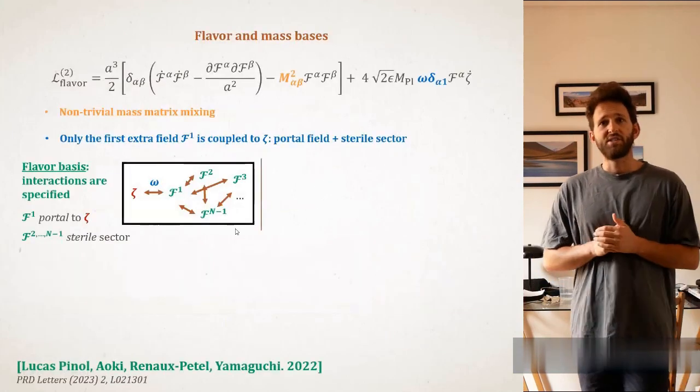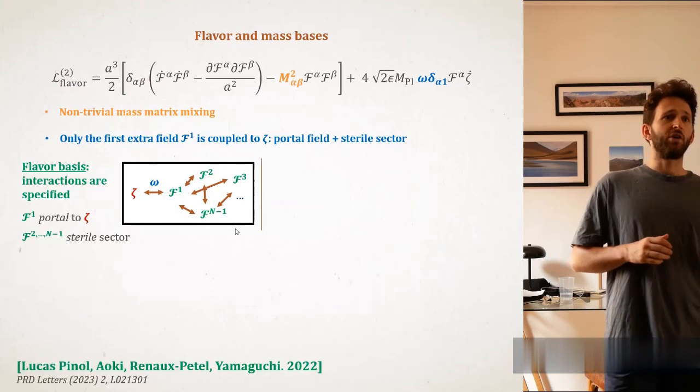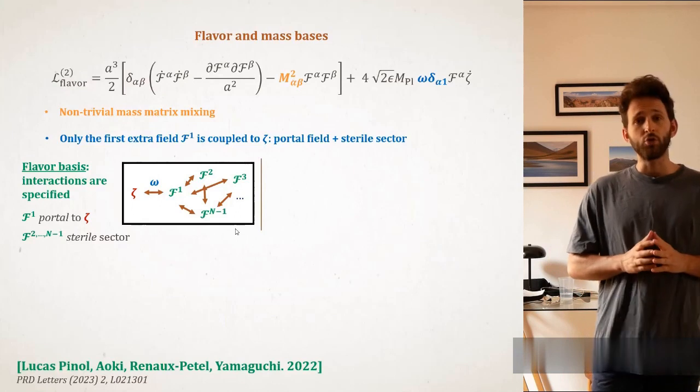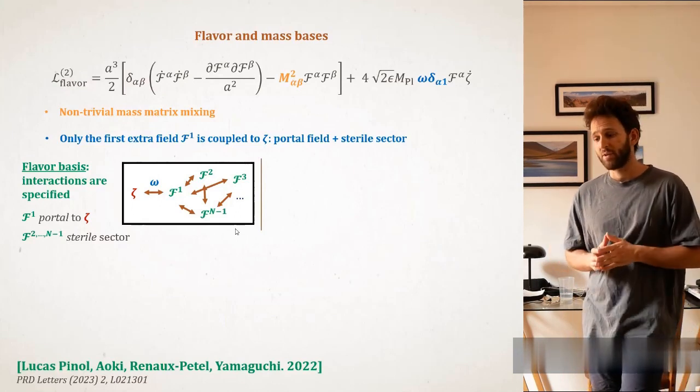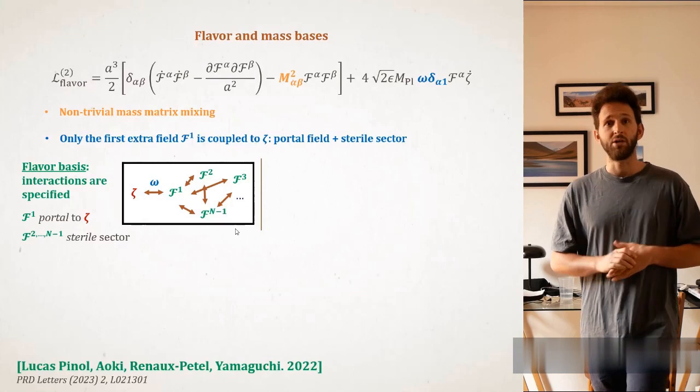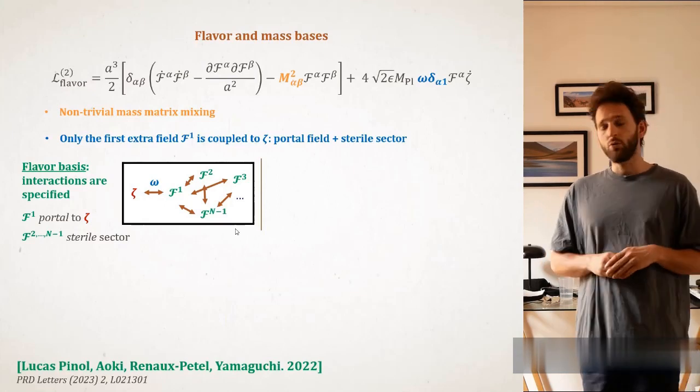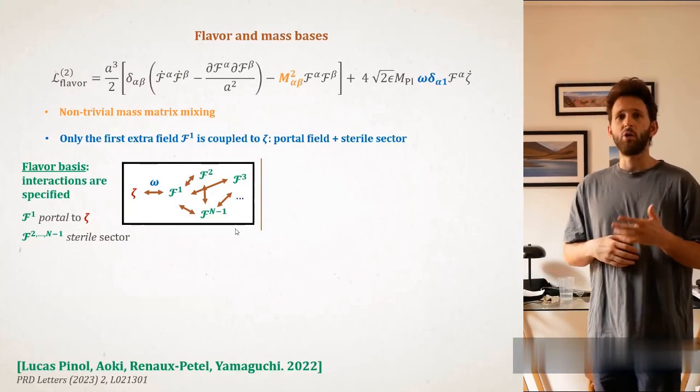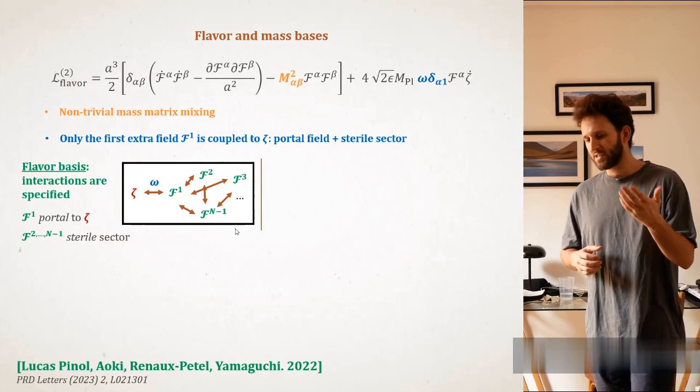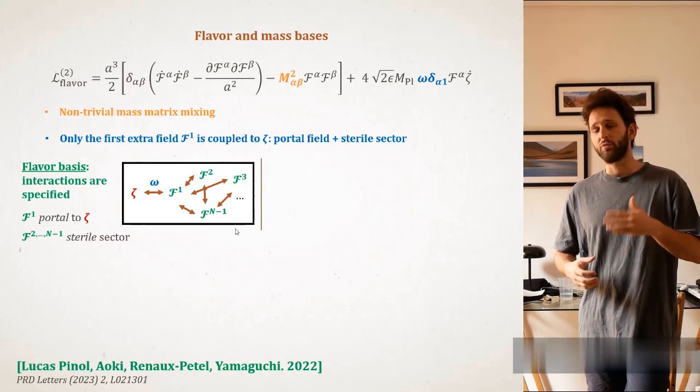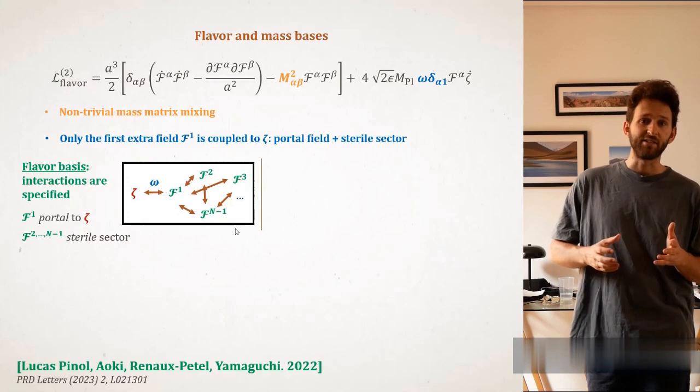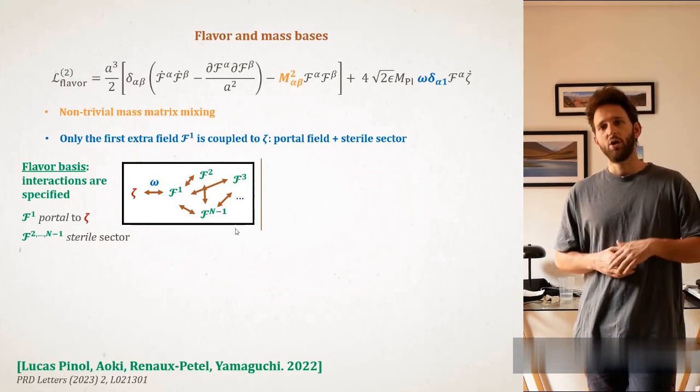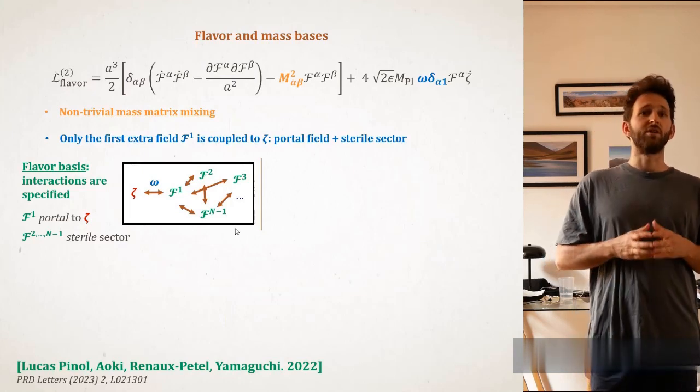So, the quadratic action reads as follows. As you can see, apart from usual canonical kinetic terms for the fields F^α, they are also coupled together via a non-trivial mass matrix M_αβ. When I say non-trivial, I mean non-diagonal. Also, those new fields F^α are coupled to zeta, the curvature perturbation, via a bilinear coupling. And you see that this bilinear coupling takes a particular form, since only the first of these eigenstates, that we will call the flavor eigenstates, because there is this particular symmetry for the interactions, only the first field F^1 interacts directly with zeta.